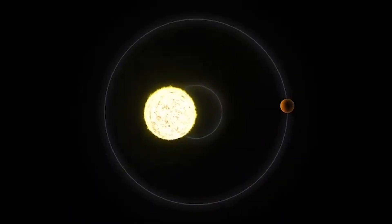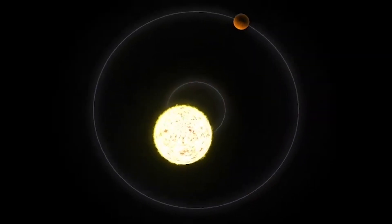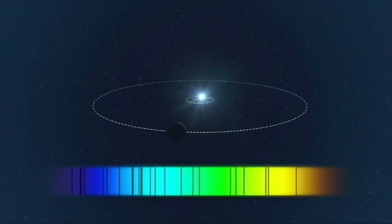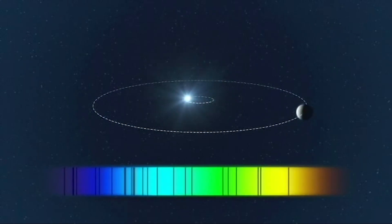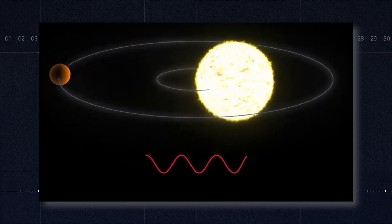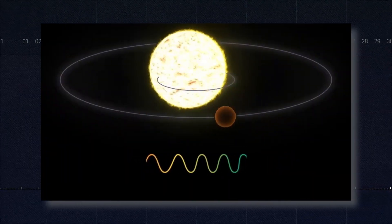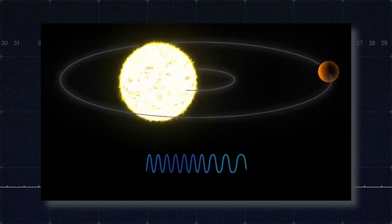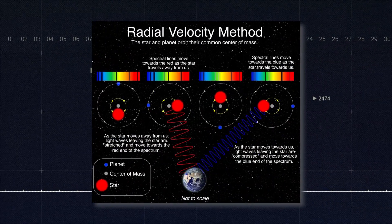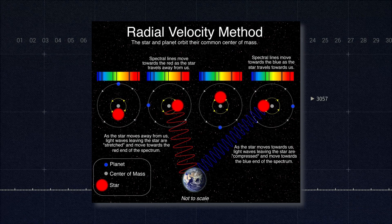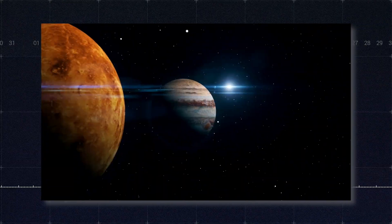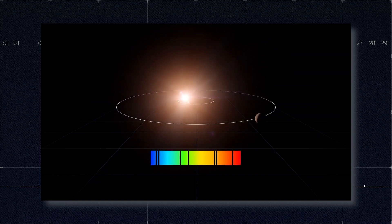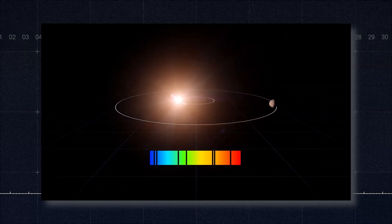The wobble method works a bit differently. Very precise measurements are made of the star's spectrum. If an object is moving away from the observer, its spectrum is shifted towards the red end. If it's moving towards the observer, the shift is towards the blue end. The wobble method looks for a very small shift in the spectrum, caused by the gravity of a planet tugging the star slightly toward or slightly away from the observer.